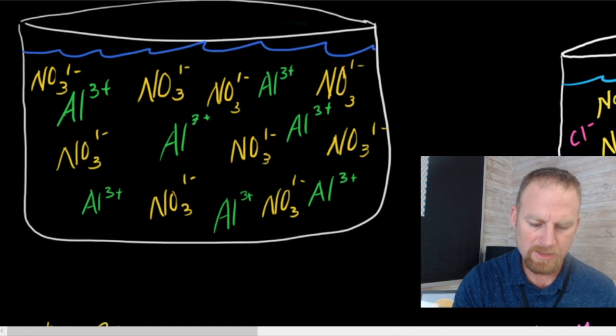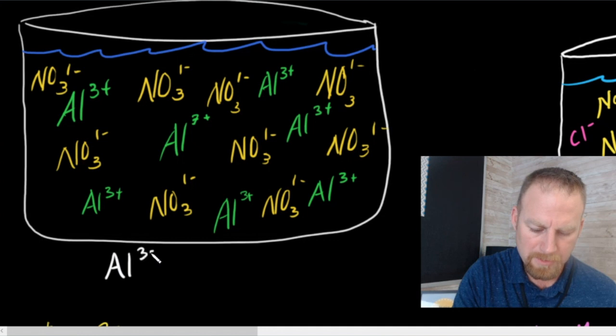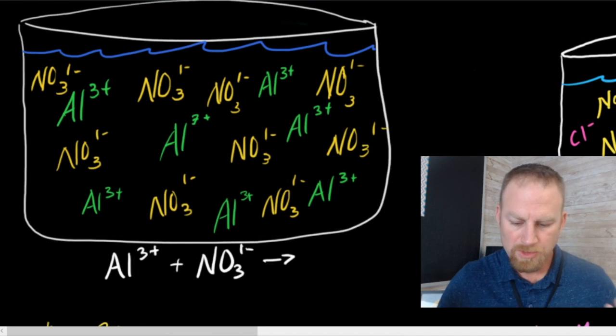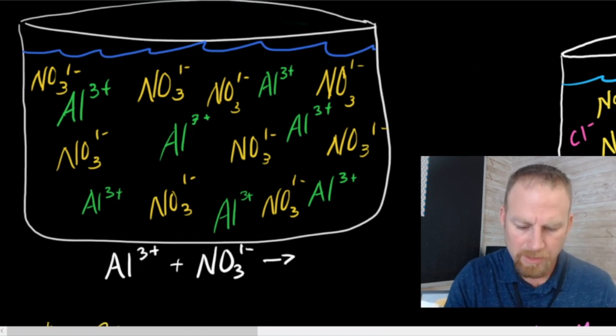So you might see this written as something like this. For a problem, it might say aluminum three plus combining with nitrate, which is one minus. What do you get as the resulting formula? So in this case, I'm going to just see how they combine.